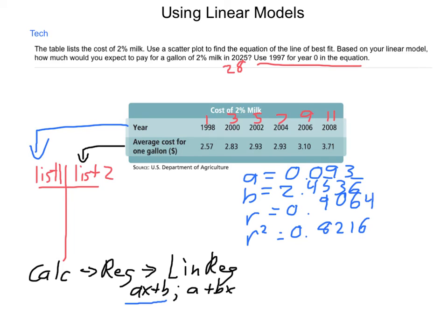And what these do is A here is going to be my slope. B is going to be my y-intercept, meaning that in year 0, or 1997, milk costs about $2.45 a gallon. Then, our A value is our slope. Each increasing year from 1997, it's going up about 9 cents per gallon.